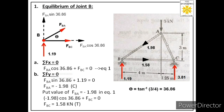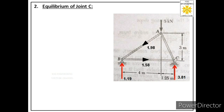Rule 2 says: after solving a joint, pick the next immediate joint. Both joint A and joint C are immediate neighbors of joint B. At each, only one unknown force remains. We choose to start with joint C.